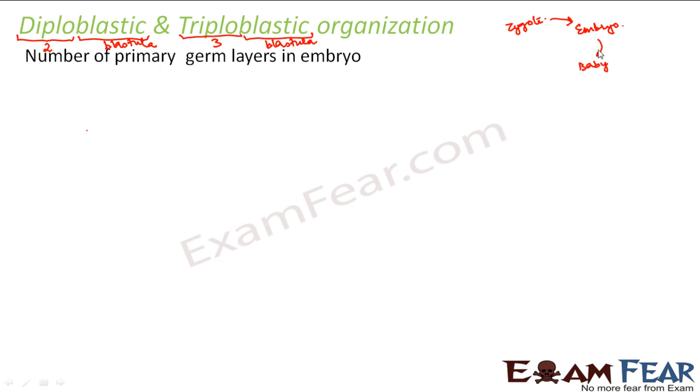Now, what happens during reproduction? The male and the female gametes combine together to form a zygote. Then what happens to the zygote? This zygote will gradually form the embryo. That embryo will grow to form the baby. But there are several stages present between zygote and embryo, and embryo to baby. The zygote doesn't immediately become an embryo — this series of steps is known as embryonic development.